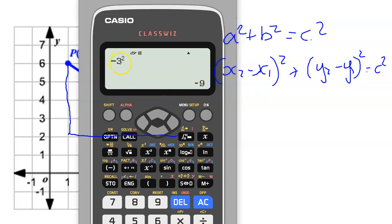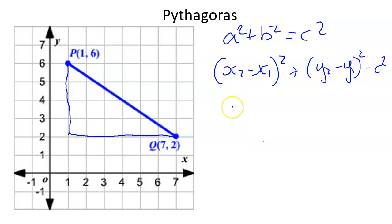It's because BIDMAS says to do the squared first. So make sure you pop a bracket round your squares, and then it's not going to go wrong. So just be careful. I would use brackets in this for sure, to make sure I didn't make silly mistakes with my minus signs.